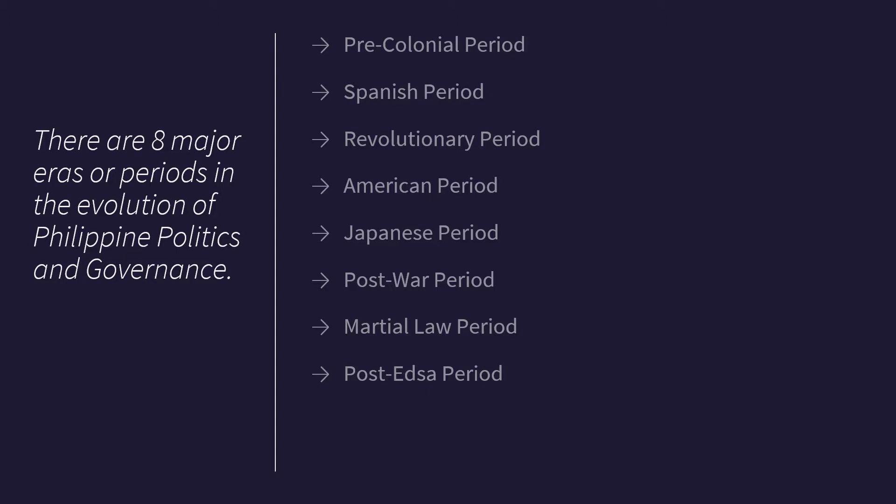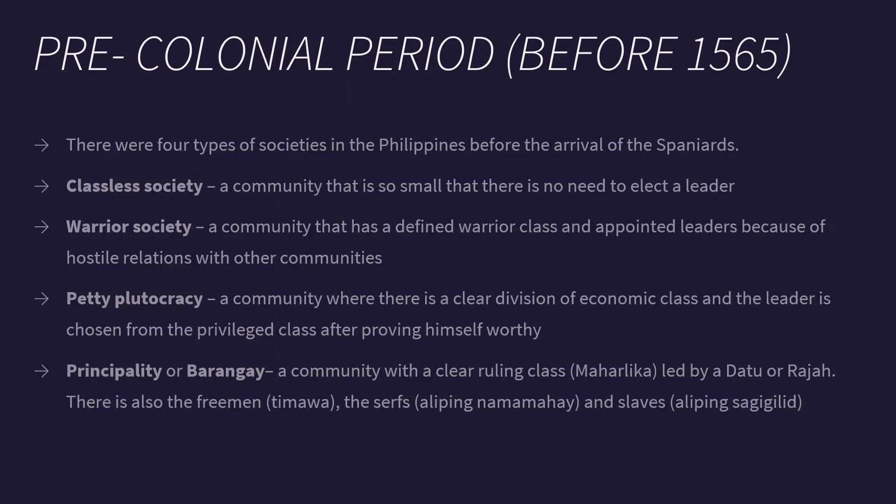We will go through each of these periods one by one. The pre-colonial period is the time before 1565. There were four types of societies in the Philippines before the arrival of the Spaniards. The class society is a community so small that there is no need to elect a leader — they only have leaders for hunting parties, and the leadership ends when the hunting party is over. A warrior society is a community with a defined warrior class and appointed leaders because of hostile relations with other communities. The petty plutocracy is a community where there is a clear division of economic class and the leader is chosen from the privileged class after proving himself worthy.